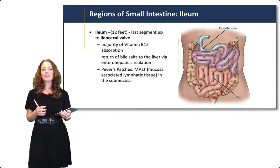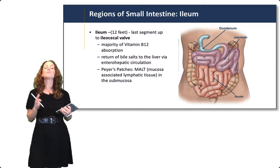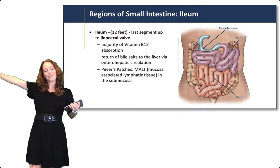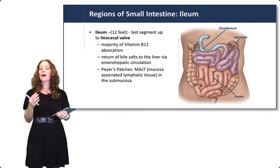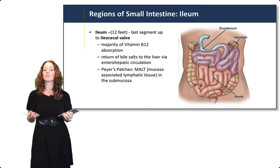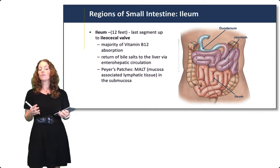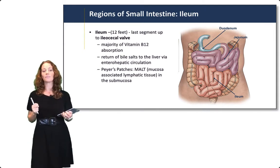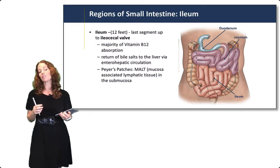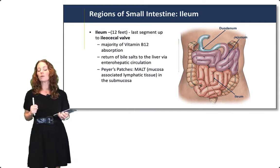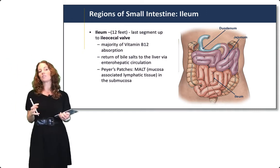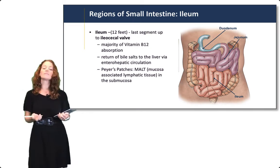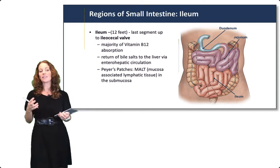Finally, the ileum is 12 feet long if we were to remove the mesentery and stretch it out. It's the last segment of the small intestine, all the way up to the ileocecal valve. What's happening in the ileum is a lot of B12 absorption, return of bile salts to the liver through enterohepatic circulation, and it's also full of Peyer's patches — lymphatic tissue, mucosa-associated lymphatic tissue or MALT, within the submucosa. Peyer's patches help activate the immune system if there's something pathogenic entering through the food within the small intestine.